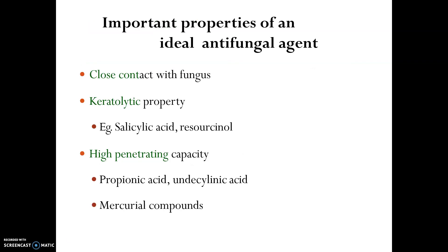The important properties of an ideal antifungal agent are: first, it should have close contact with the fungus so that it can interfere with fungal survival. Second is the keratolytic property — it should be able to lyse the keratin layer affected by the fungus so that the area can be cleared. Third is high penetrating capacity — it should penetrate the fungus, get inside, and produce damaging activity to the fungal life cycle to break the fungal cell and decrease the infection.